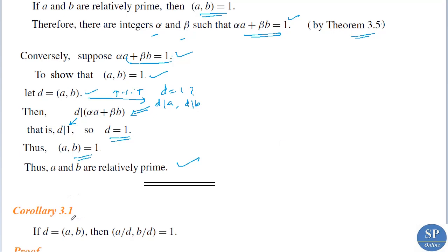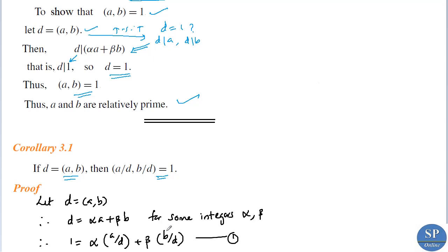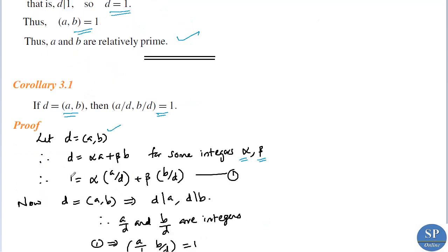Corollary 3.1: if d equals GCD(a, b), then GCD(a/d, b/d) equals 1. To prove this, suppose d equals GCD(a, b); then d can be expressed as a linear combination of a and b by the previous theorem: d equals alpha·a plus beta·b for some integers alpha and beta. Dividing throughout by d, we get 1 equals alpha·(a/d) plus beta·(b/d).